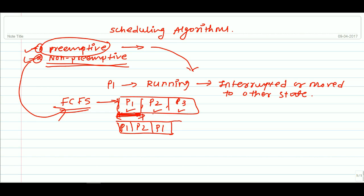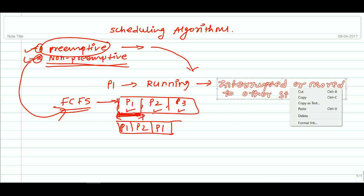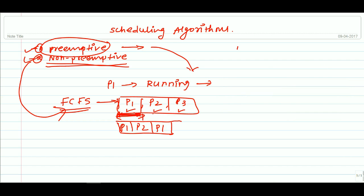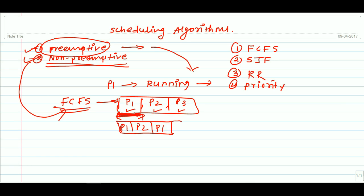Depending upon these criteria, there are five to six scheduling algorithms. The first is First Come First Served (FCFS), the second is Shortest Job First (SJF), the third is Round Robin, the fourth is Priority Scheduling, and the fifth is Multi-Level Queue Scheduling.